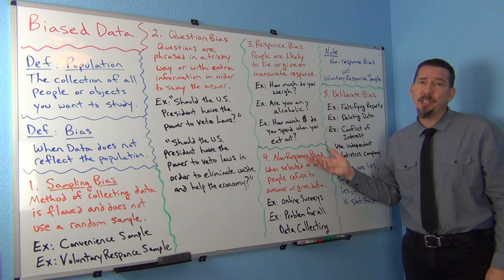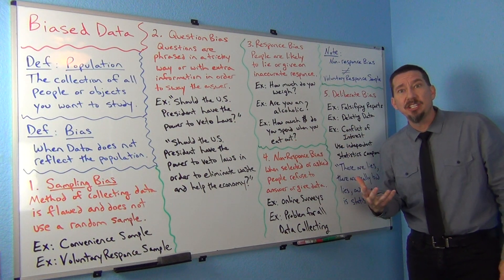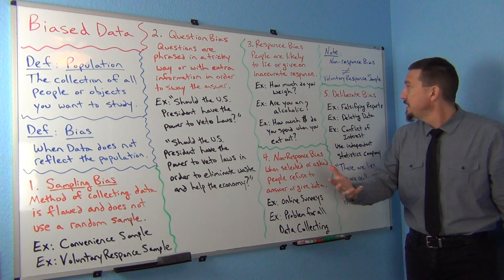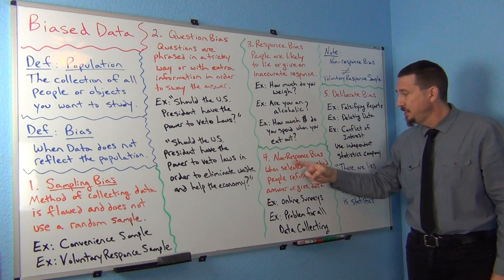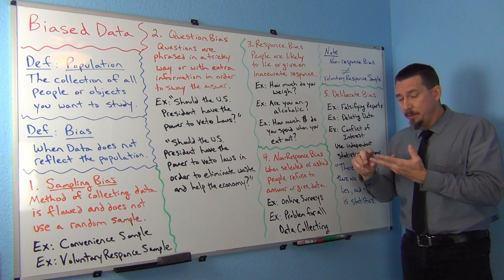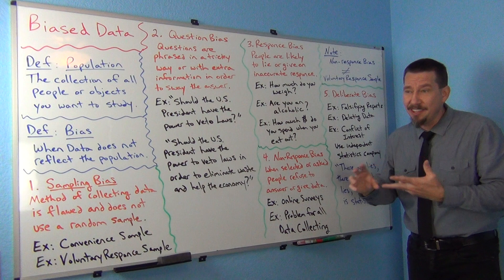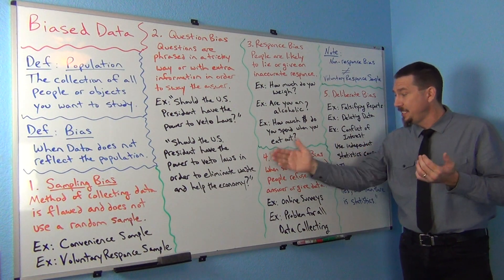So this becomes a really problem. This is one of the ones that I think even the best of statisticians and the best of data miners and data scientists have a tough time with non-response bias because so many people now are worried about either identity theft or they're worried about getting a virus if they click on something. So it's really difficult to get good data.